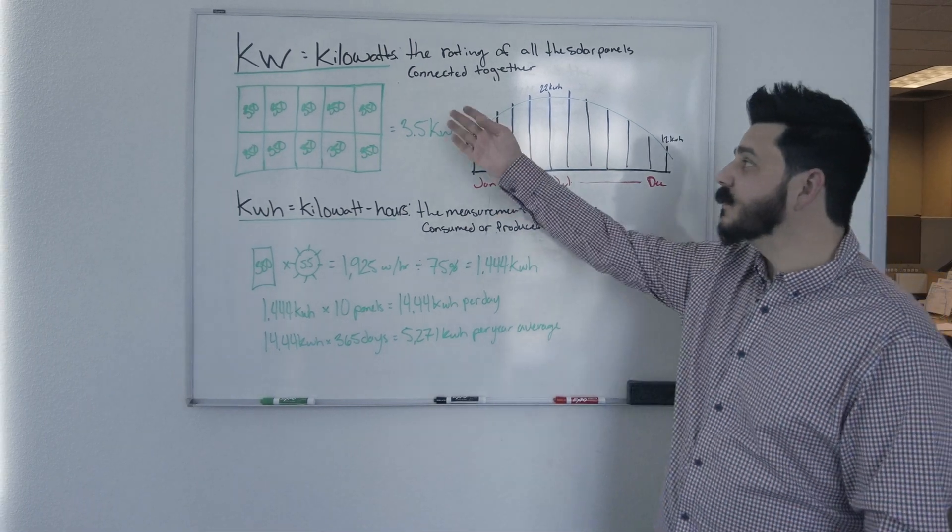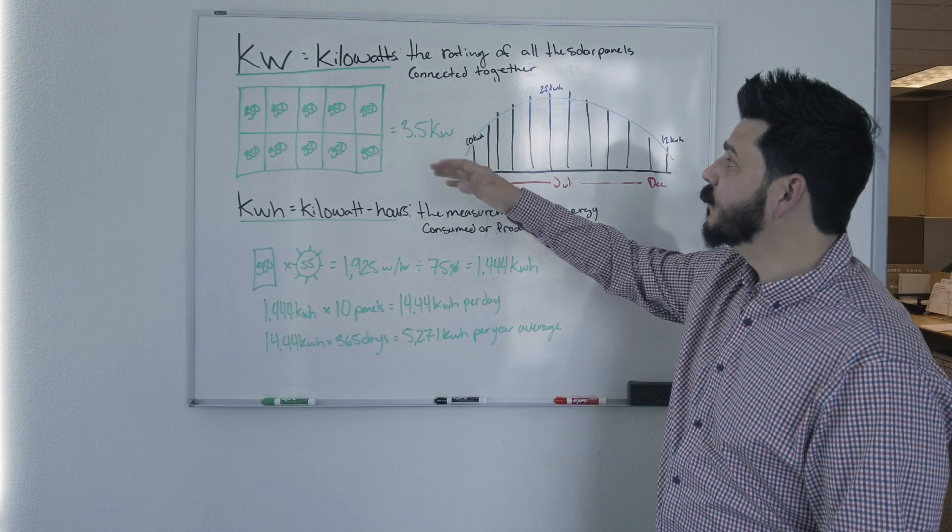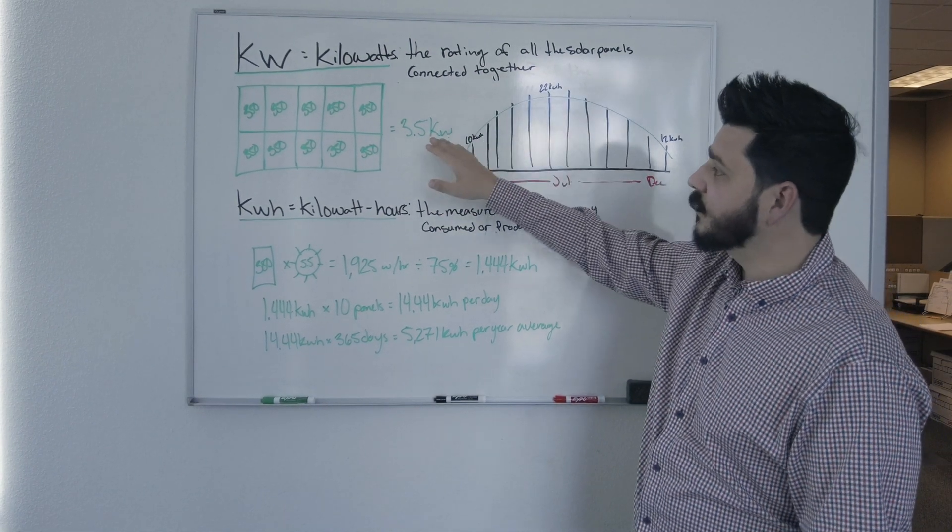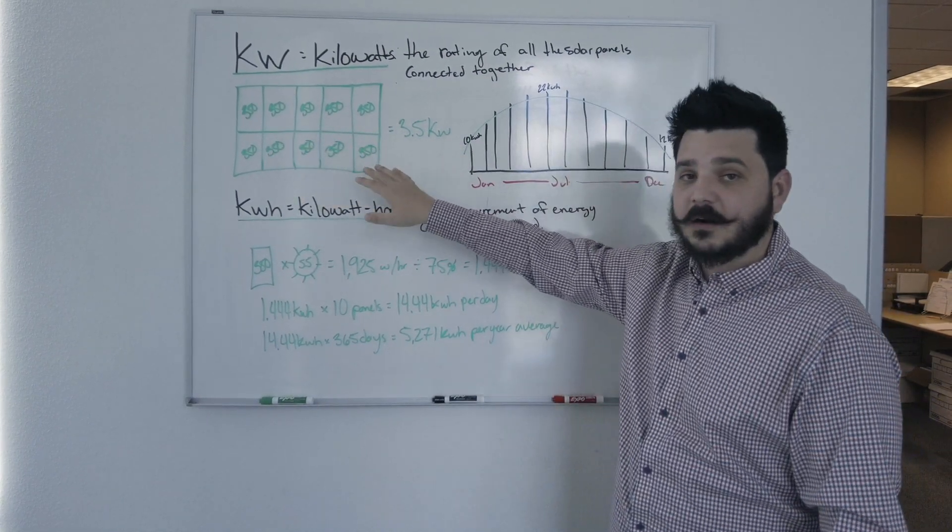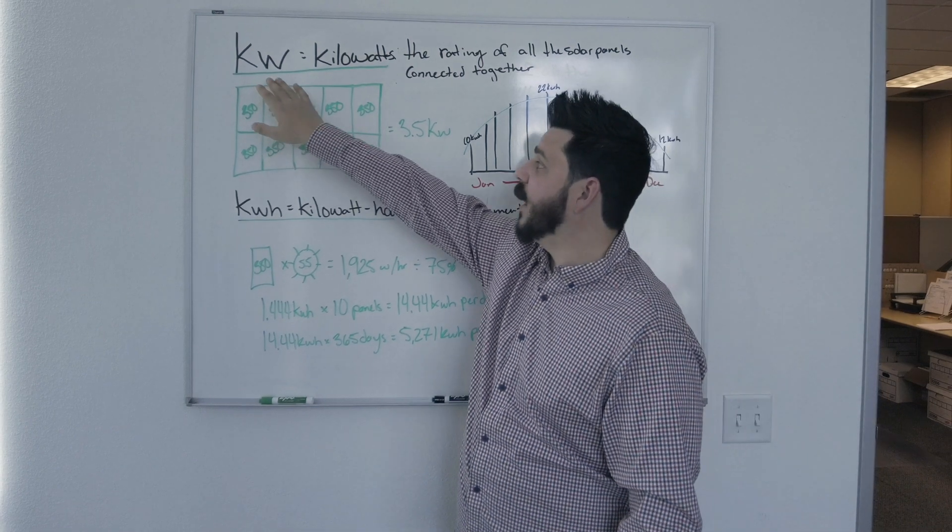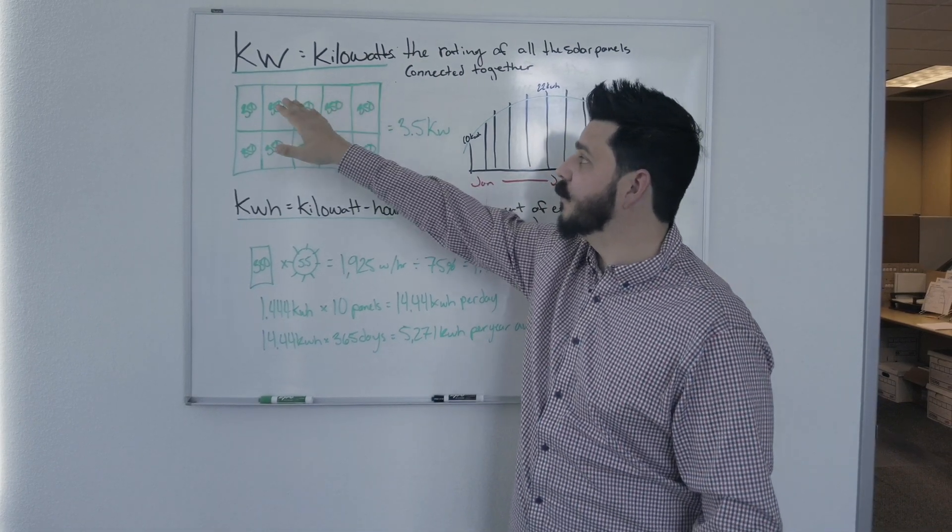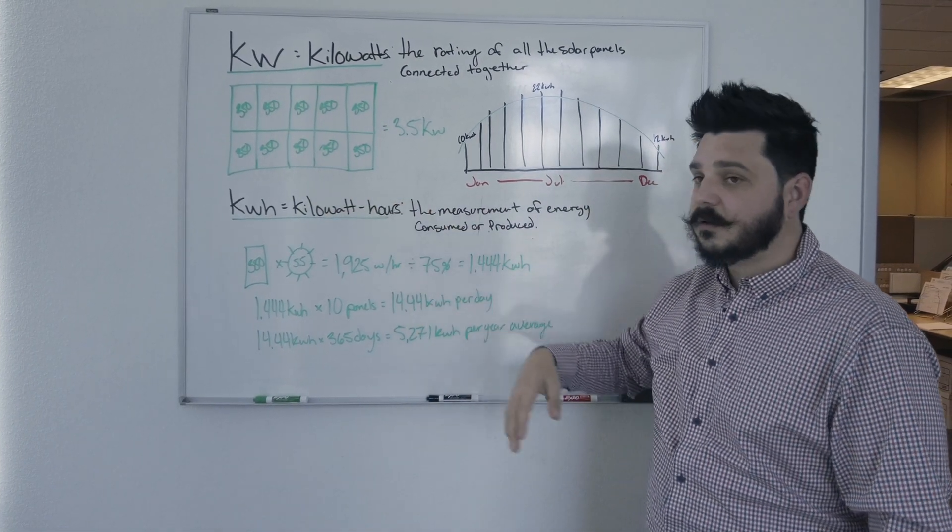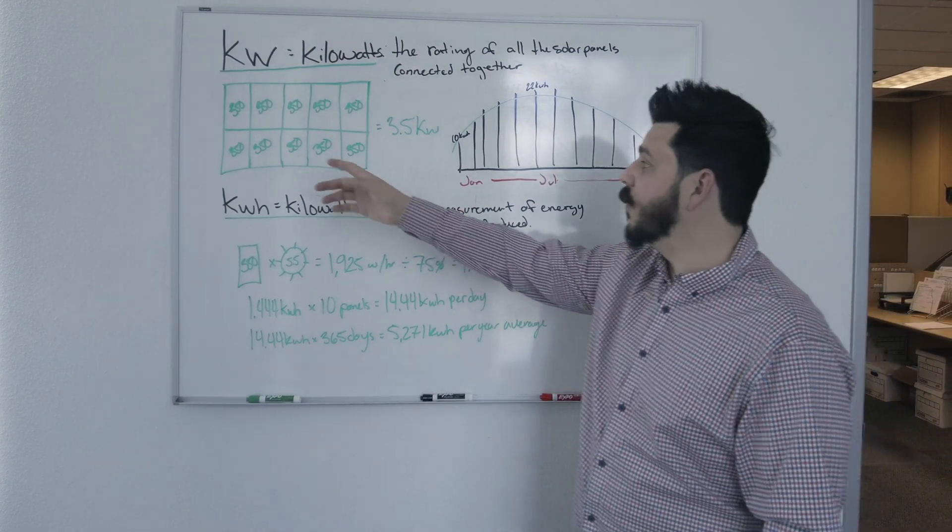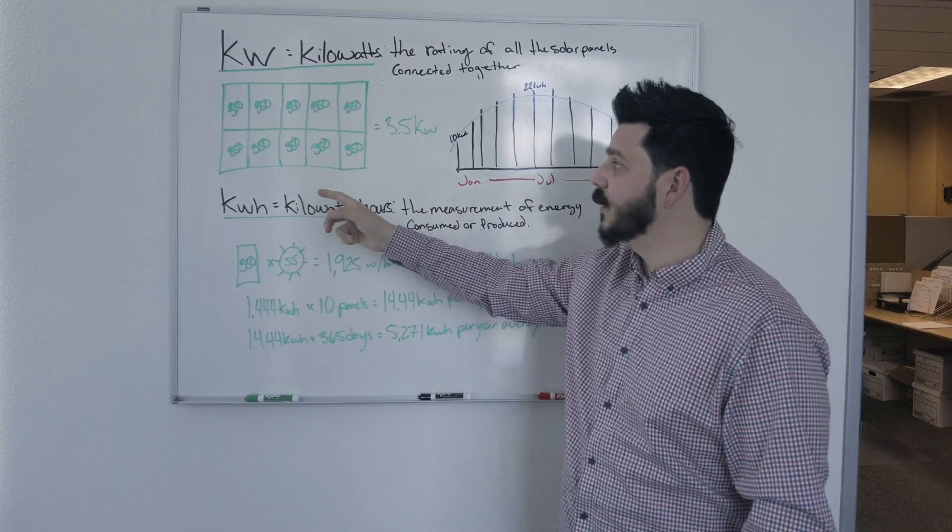So I want to start with kilowatts. Kilowatts is the rating of all the solar panels together. You might see a rating of kW—that is short for kilowatts. Your bid should show you that rating of all the DC solar panels connected together.